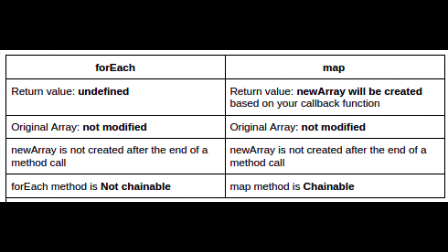For the forEach method: the return value is undefined, the original array is not modified, a new array is not created after the method call, and the forEach method is not chainable.